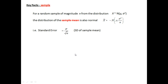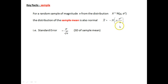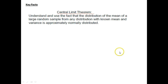For a sample mean of magnitude n from a normal distribution with known mean and variance, the sample mean is also distributed normally with mean mu of the population, but variance sigma squared over n of the sample magnitude. So that means the standard error — it's called the standard error, not standard deviation, because it's of the sample mean — is sigma over root n.